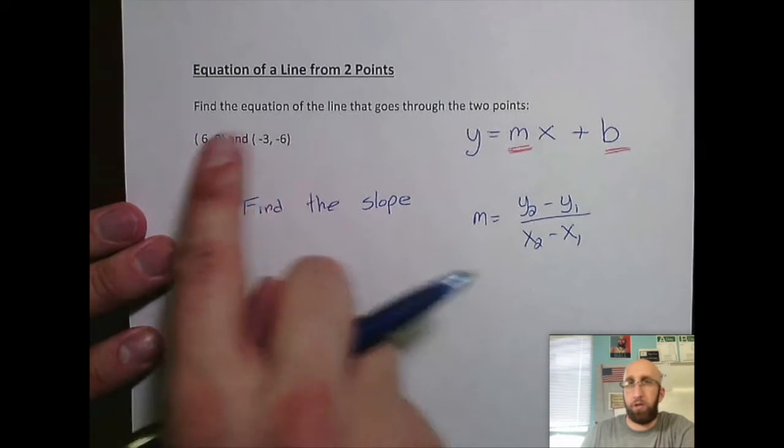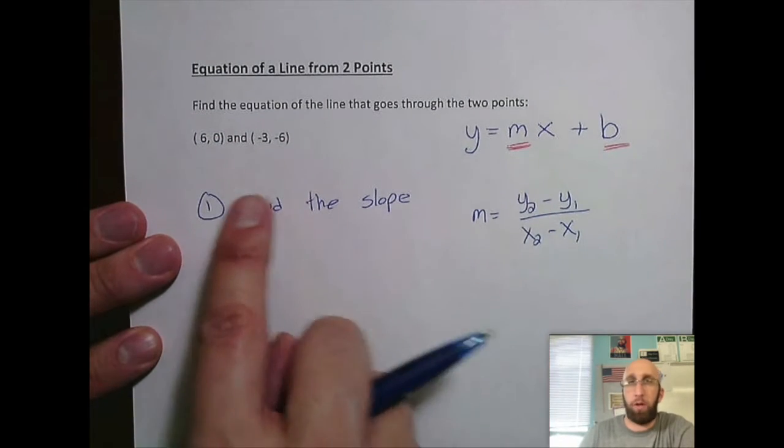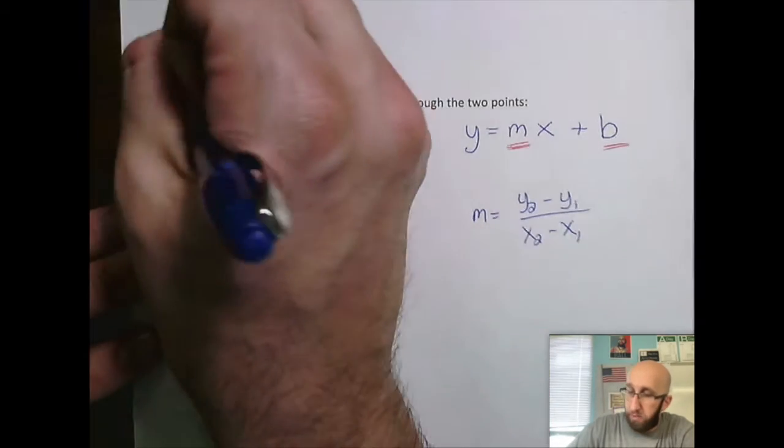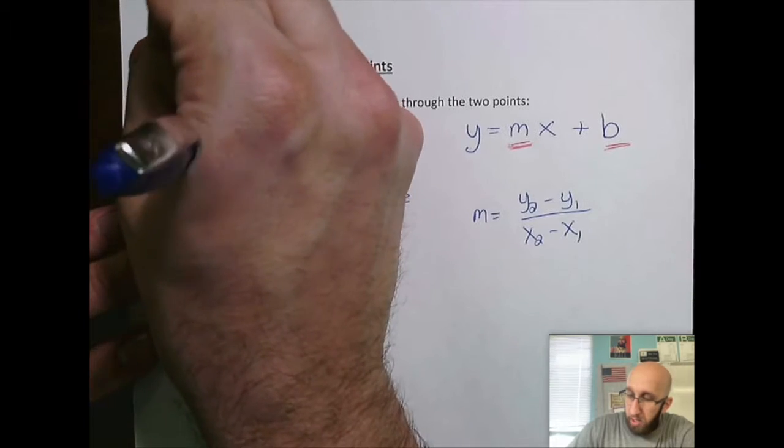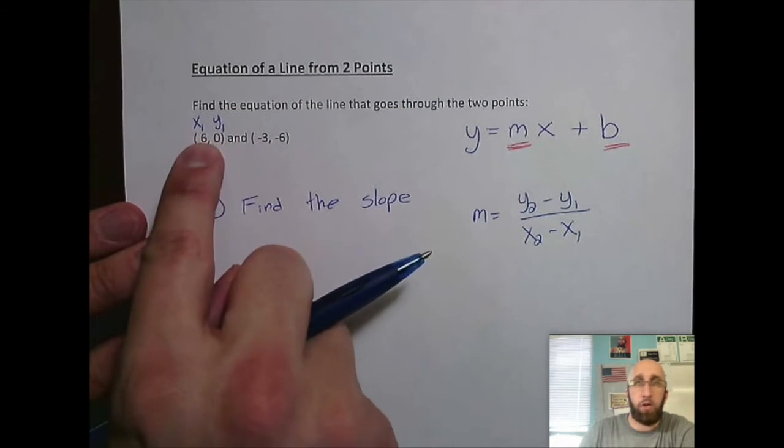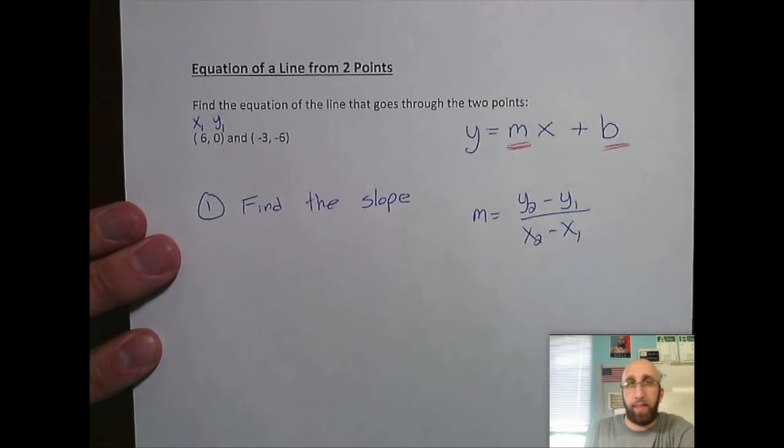All right, so we have our two points. We're going to use this formula. We're going to find our slope so we can get on our way here. This is our first point. This is our second point. So I'm going to label this x1, y1. So that's the x1, y1. Why did I use ones? It's the first point listed.